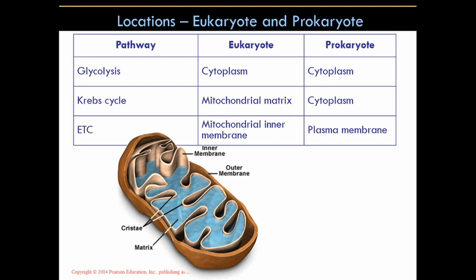I put the picture of the mitochondrion down below. The matrix is that blue area — it looks like a really cool swimming pool. The Krebs cycle takes place in this aqueous environment within the inner membrane, called the cristae, of the mitochondrion. In prokaryotes, they don't have mitochondria, so Krebs takes place in the cytoplasm.